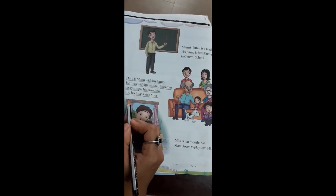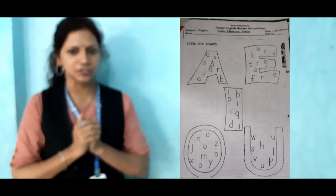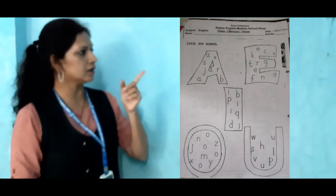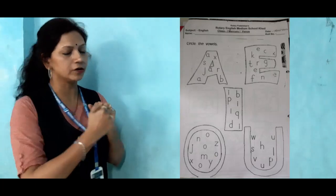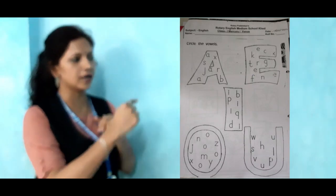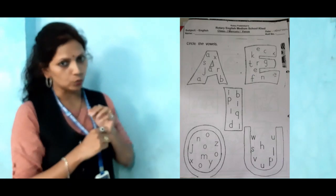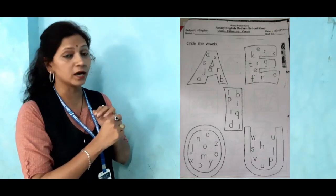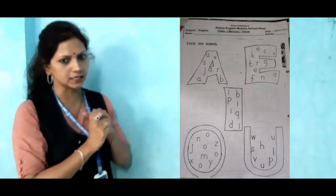Now let's move to the worksheet. So today we are going to start our worksheet. The question is: circle the word. In this worksheet it is already given A, E, I, O, U, and there are some letters in each. You have to find the vowel and circle it.